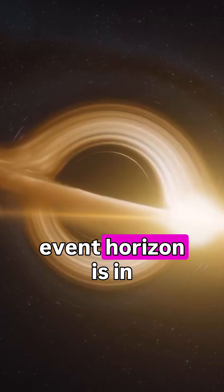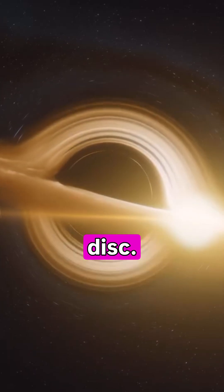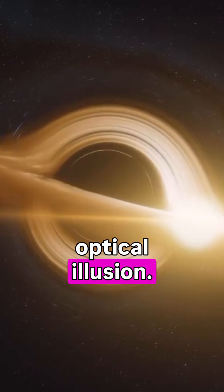The ring around the event horizon is, in principle, the accretion disk, but its location is an optical illusion.